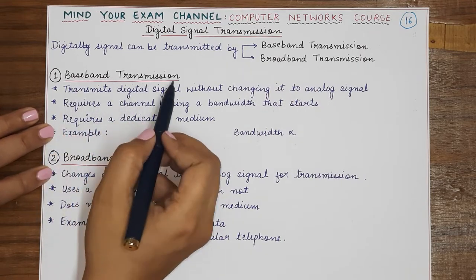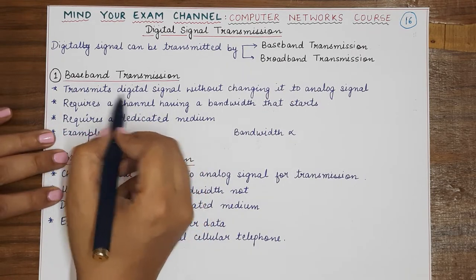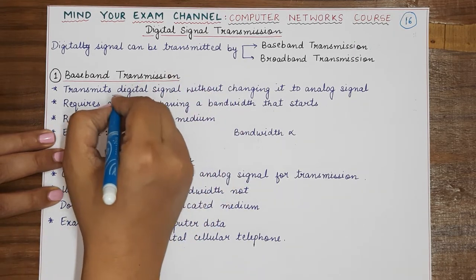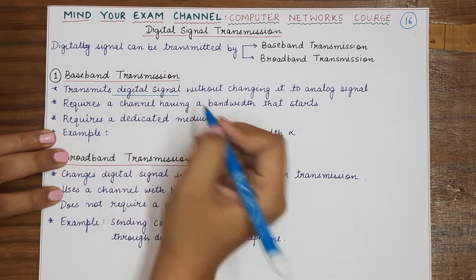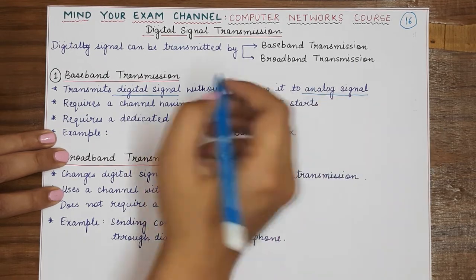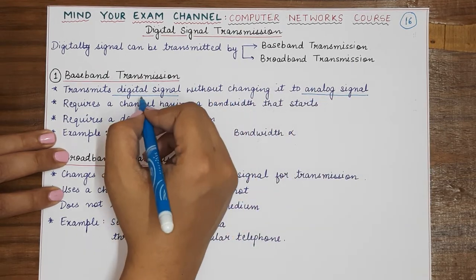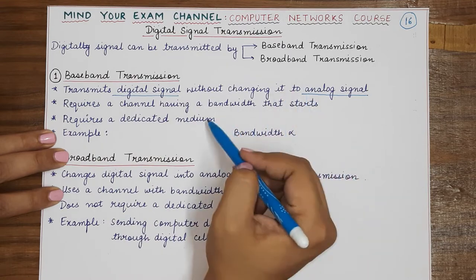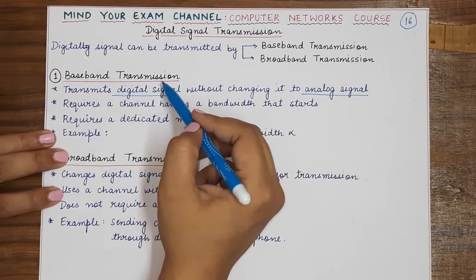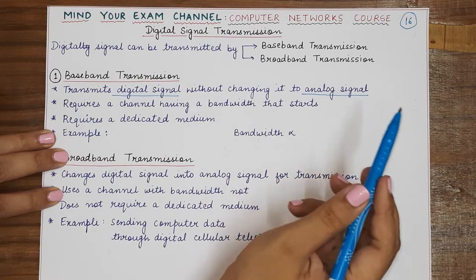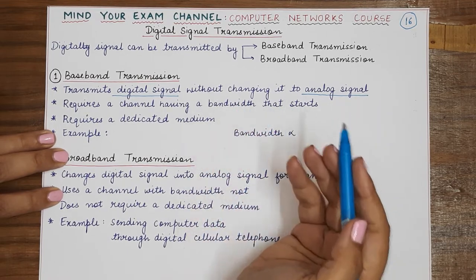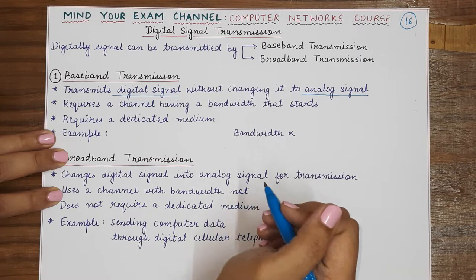In baseband transmission, we are transmitting a digital signal but we are not changing this digital signal into an analog signal. Without changing the digital signal from its original form, we are sending it through the transmission channel, communication link, or physical media used for transmission.